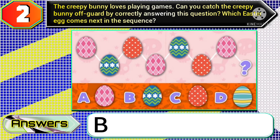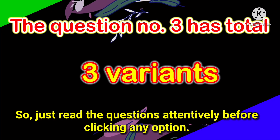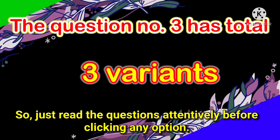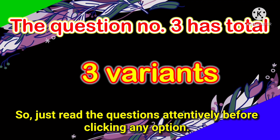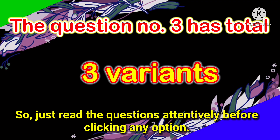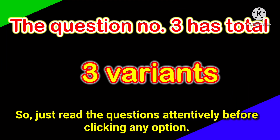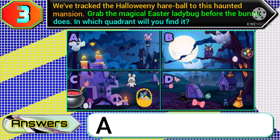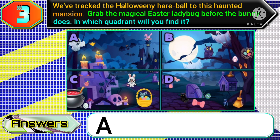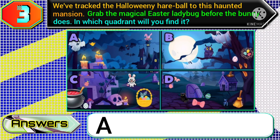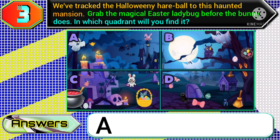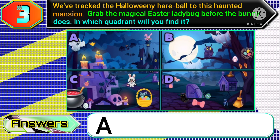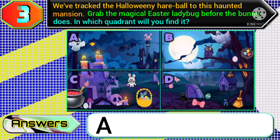Question number three has total three variants, so just read the questions attentively before clicking any option. In variant one, if they ask you the question 'grab the magical easter ladybug before the bunny does,' then you need to click option A.